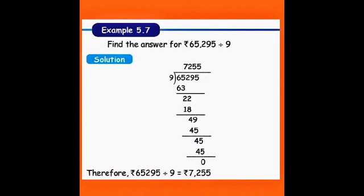First we will take two numbers at a time, 65. How many 9s are in 65? 7 nines in 65. That is 63. 65 minus 63, you have got the answer as 2. Take down the next 2, you will get 22. How many 9s in 22? 2 nines in 22. That is 18.